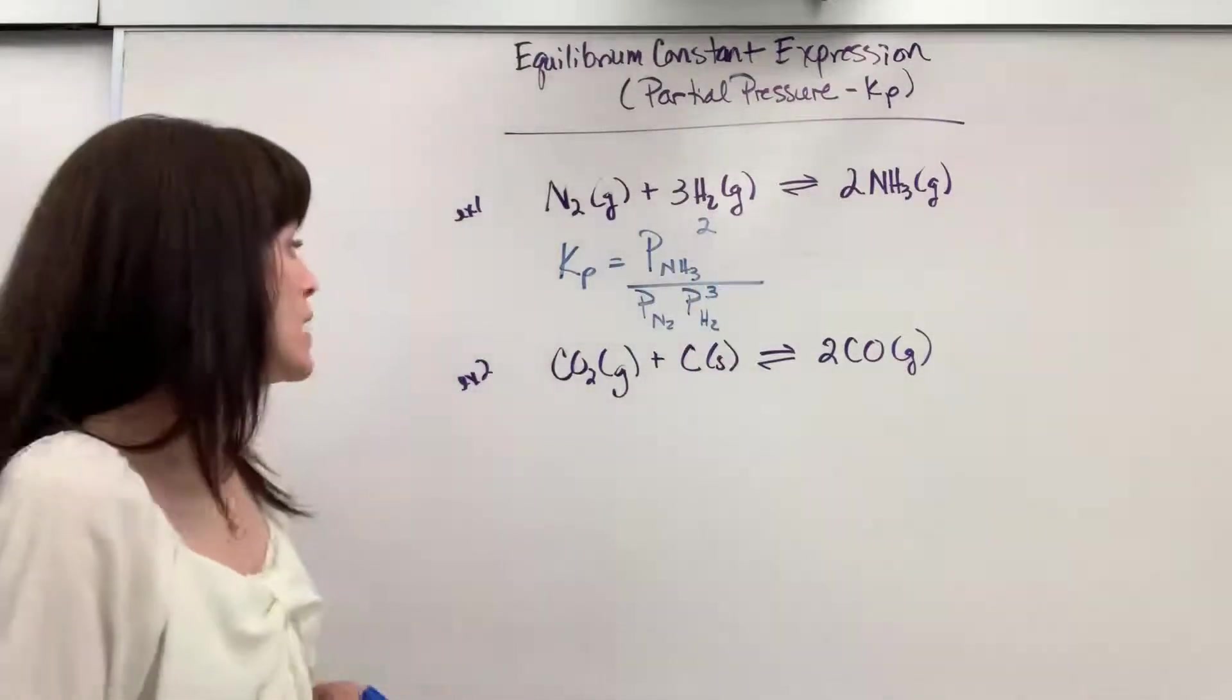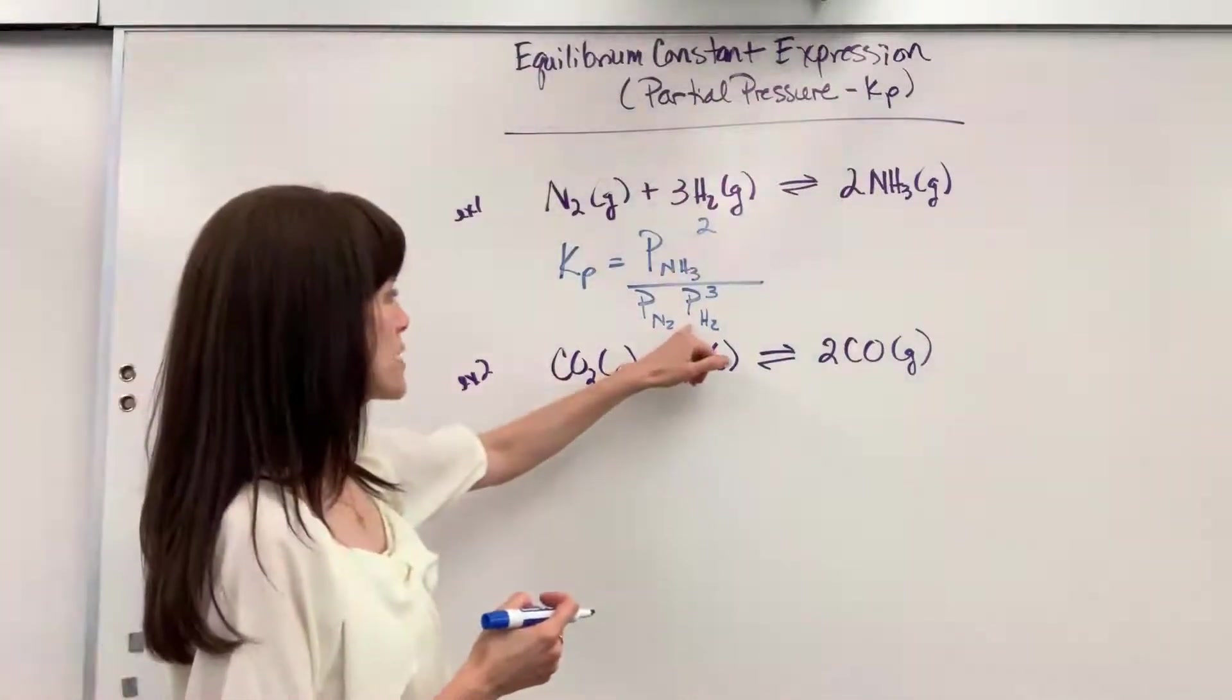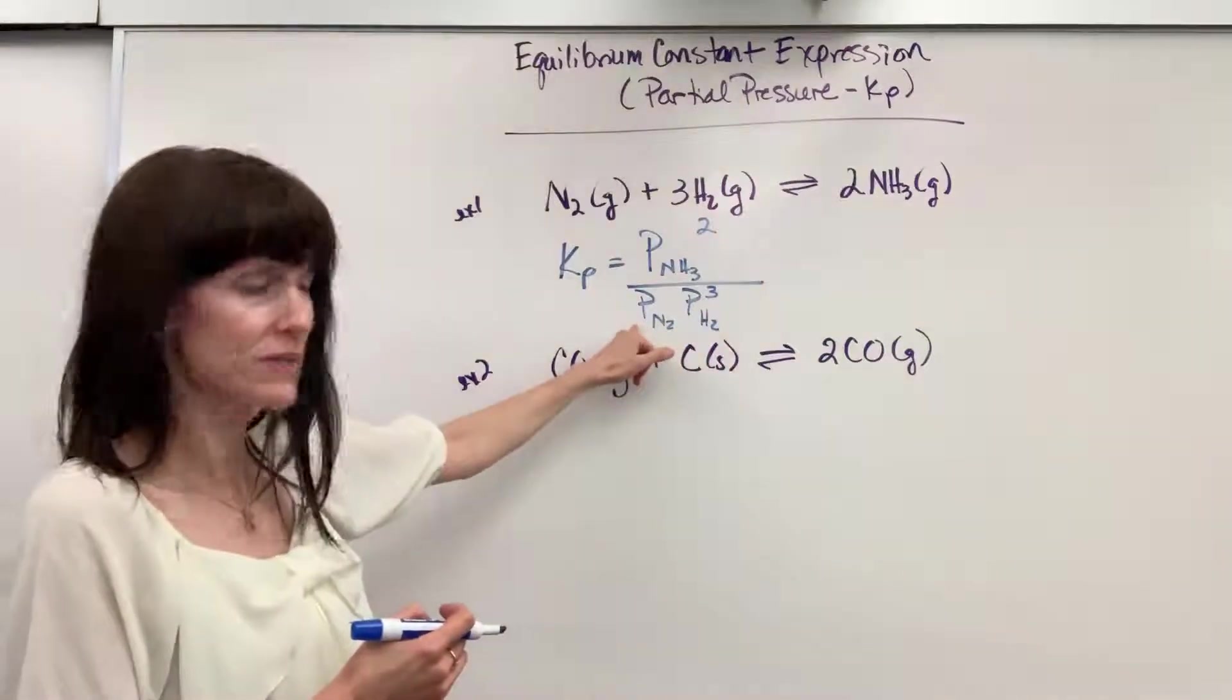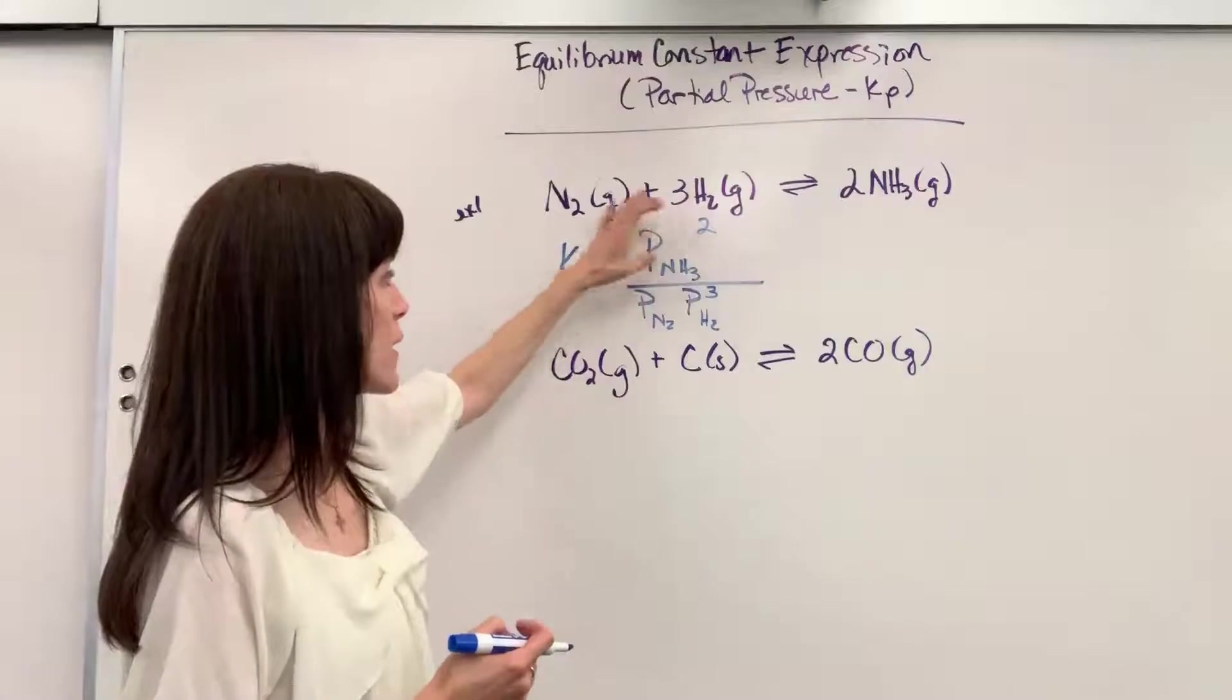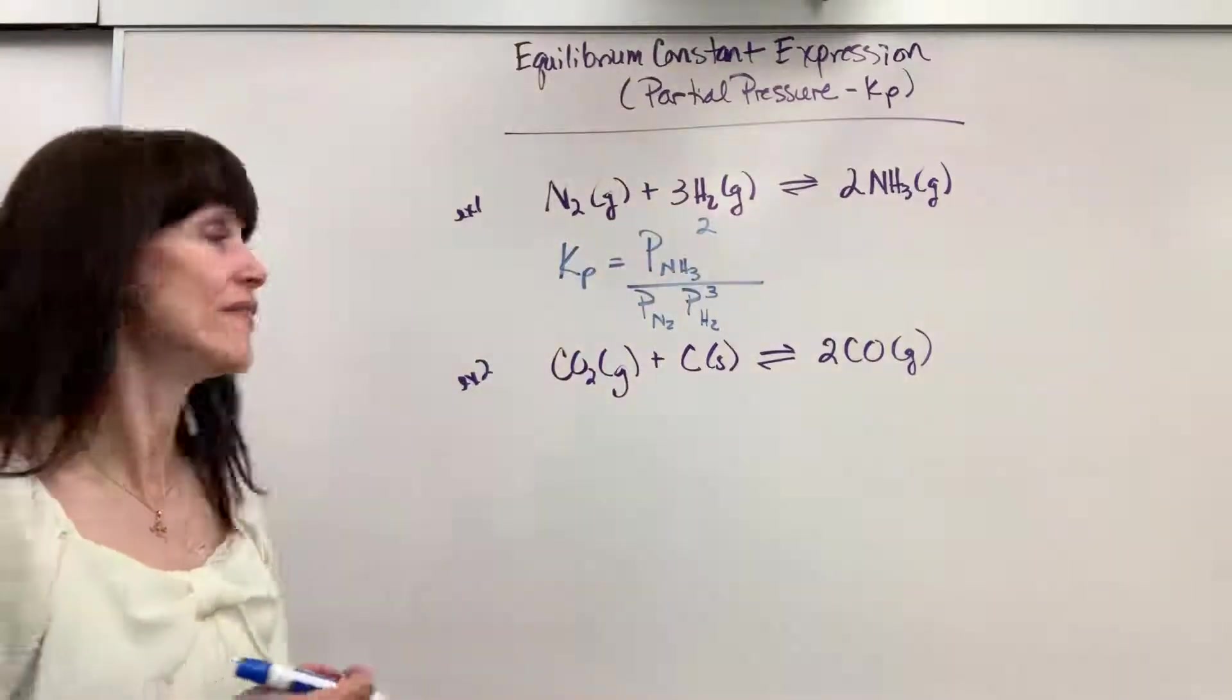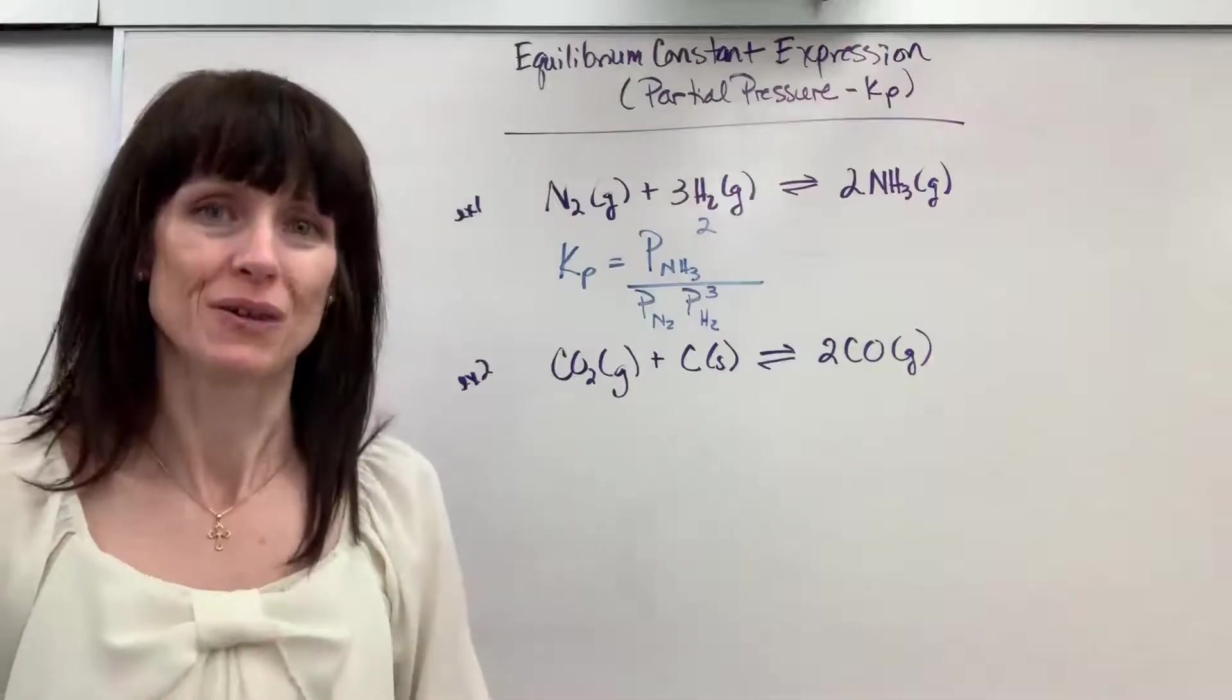So if I were to plug in all my partial pressures, it would be partial pressure of hydrogen cubed times the partial pressure of nitrogen - that's all on the bottom - and it would be partial pressure of ammonia squared. Divide those two numbers, and that will give me the equilibrium constant using those partial pressures.